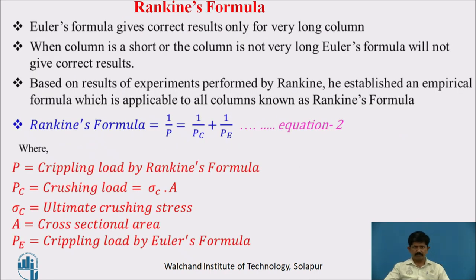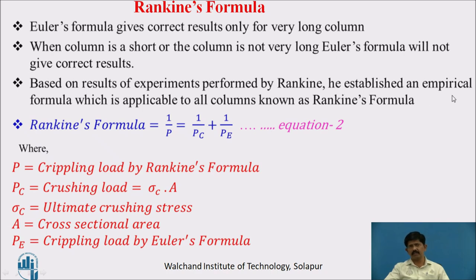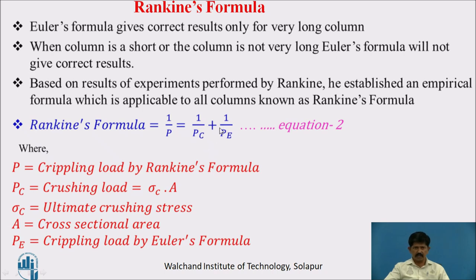Rankine's formula: Euler's formula gives correct results only for long columns. When the column is short or not very long, it does not give correct results. Based on experiments, Rankine established an empirical formula applicable for both types of columns: 1/P = 1/P_C + 1/P_E, where P is the crippling load by Rankine's formula, P_C is the crushing load, and P_E is the crippling load by Euler's formula.